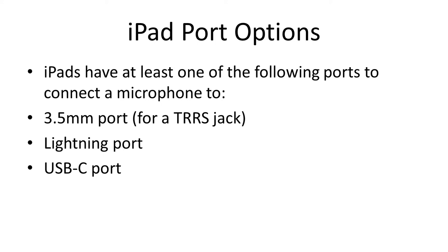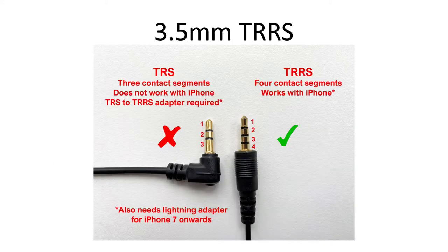Let's look at the port options in more detail, starting with TRRS. You may recognise this from your existing headphones. If your headphones use a 3.5mm jack it will probably be TRS. If you have a headset with a microphone it might be TRRS. The easiest way to tell them apart is to count the metal segments — three segments is TRS, four segments is TRRS. You can buy a TRS to TRRS adapter if required. Either way, you'll need a 3.5mm mic jack to be TRRS for that kind of connection.